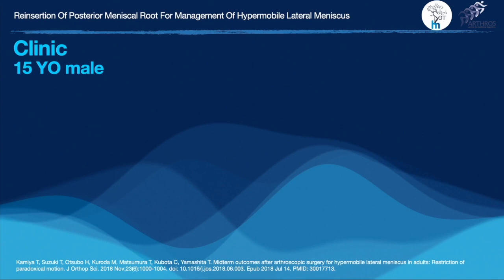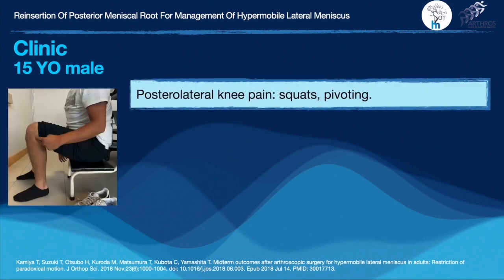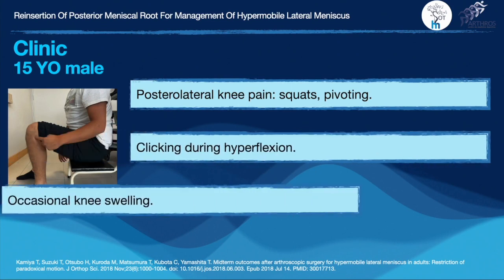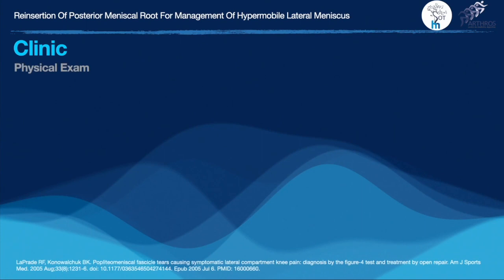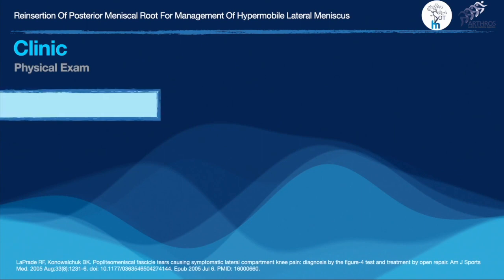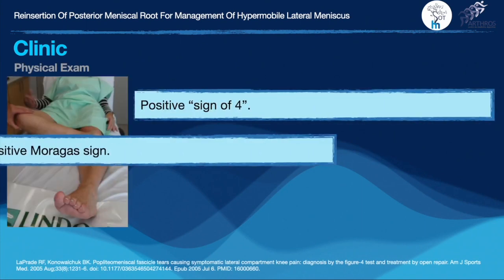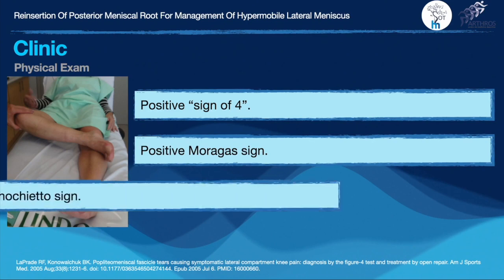We present a 15-year-old boy with posterior lateral knee pain during squatting and pivoting, clicking during hyperflexion, and occasional swelling. During physical exam, we found a positive sign of four, Moragas, and meniscal signs.